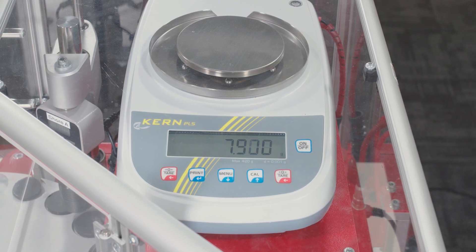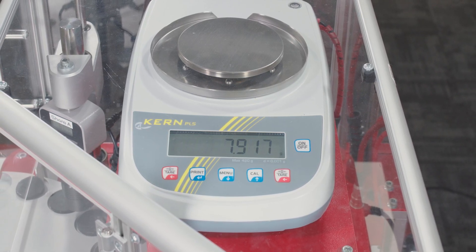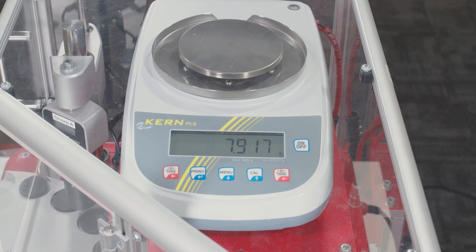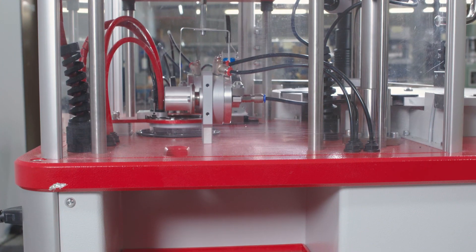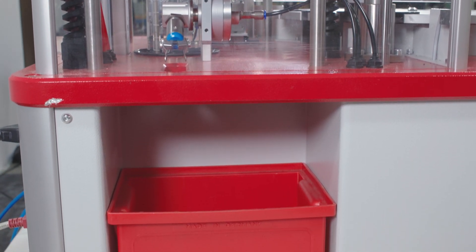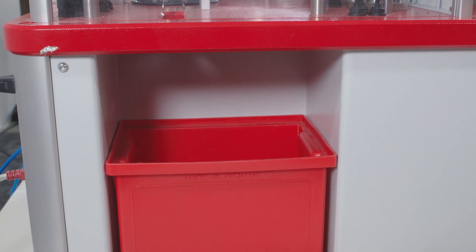A standard analytical balance with integrated calibration is used to provide the most accurate results with full traceability. After the density test, the sample is removed by an actuator and placed into a bin, where it is separated from untested samples.